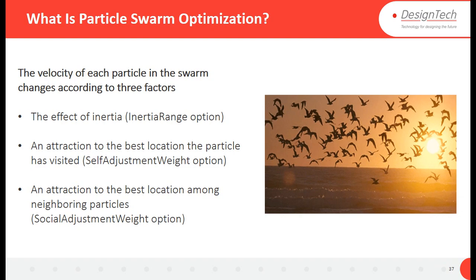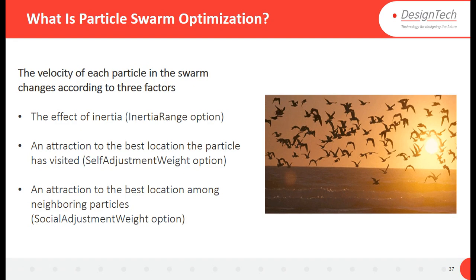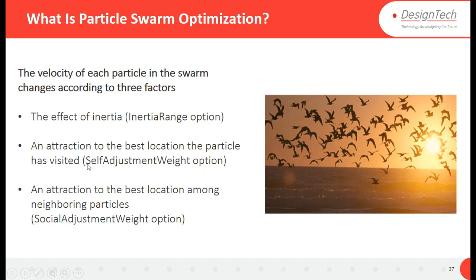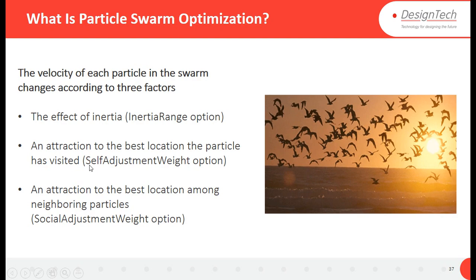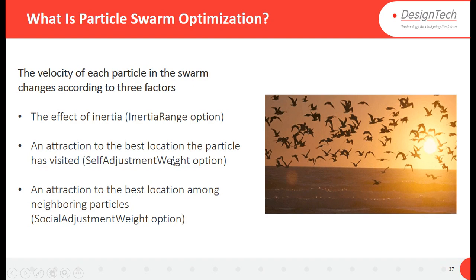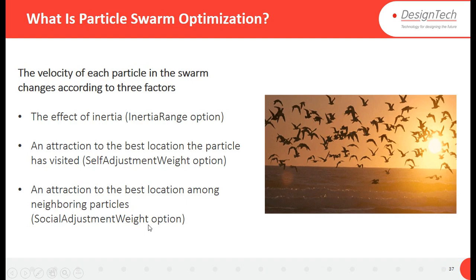The velocity of each particle in the swarm changes according to three factors. The first is the effect of inertia — the inertia weight option. These three factors are very important. Another is the attraction to the best location the particle has visited, which in MATLAB is called the self-adjustment weight. The third is the attraction to the best location found among the neighboring particles, called the social adjustment weight parameter.